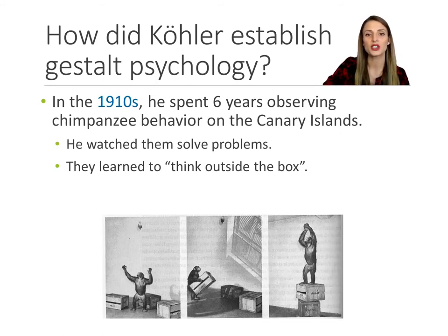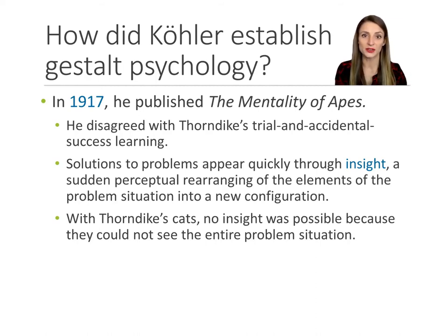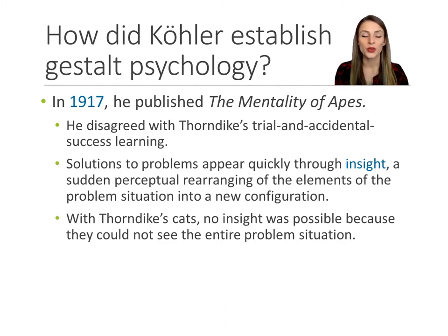Based on his observations, he drew some conclusions about animal perception. In 1917, Köhler published his results and conclusions in The Mentality of Apes. He strongly disagreed with Edward Thorndike's trial and error learning — Thorndike also called it trial and accidental success learning because there was no real strategy behind the cat's escape. They just tried a bunch of things until something worked and got out of the box. With the chimps, something different appeared to happen.